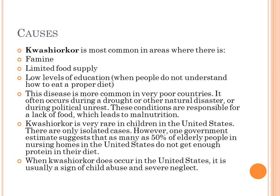Kwashiorkor is most common in areas where there is famine, limited food supply, and low levels of education. This disease is more common in very poor countries. It often occurs during a drought or other natural disaster, or during political unrest — these conditions are responsible for a lack of food, which leads to malnutrition.